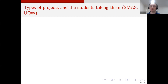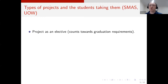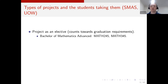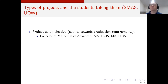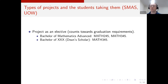I want to talk about the types of projects offered in my department. Some students can take a project that counts as an elective towards graduation requirements. These are restricted to students enrolled in the Bachelor of Mathematics Advanced program, who take a project in second year and again in third year. Most degrees at Wollongong come in two flavours: a normal version and a Dean Scholar version. Dean Scholar students take a project in their third year.